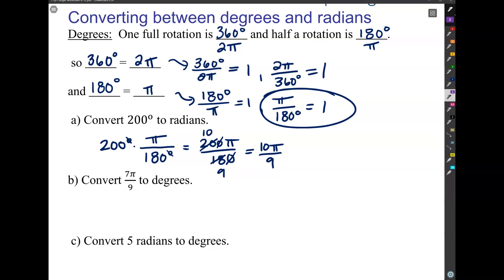Okay, convert 7π over 9 to degrees. So this is going the opposite direction, 7π over 9. So notice this doesn't have any units. So what we're really trying to do is we're trying to introduce the units degrees. So we're going to want at this point to choose one that has degrees on top.